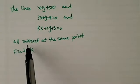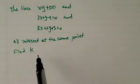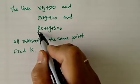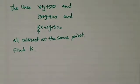The three lines all intersect at the same point. We were asked to find what the k is. k is over here, a variable. So let's get started.